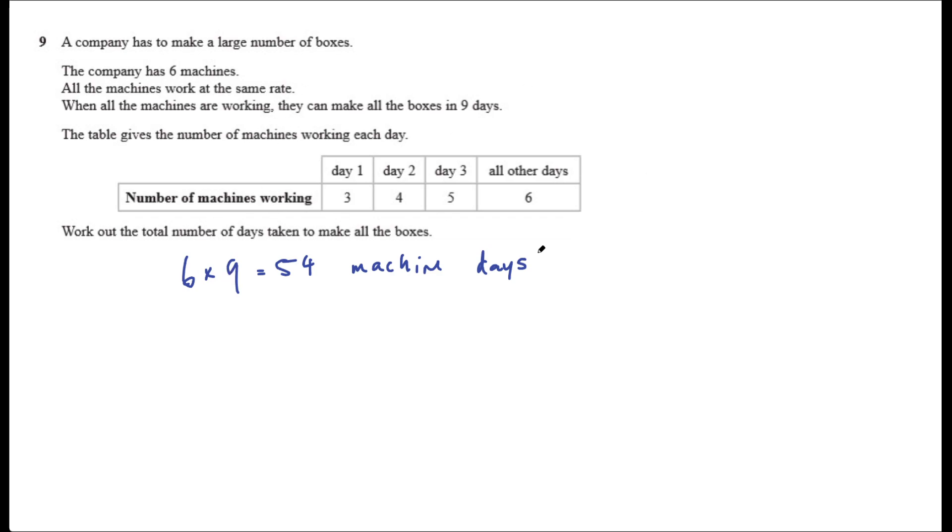Let's look at day 1 here. If we've got three machines working on day 1 and then four machines working on day 2, and then five machines working on day 3, well let's add those up. This would be 7 plus 5 is 12 machine days of work in those three days.